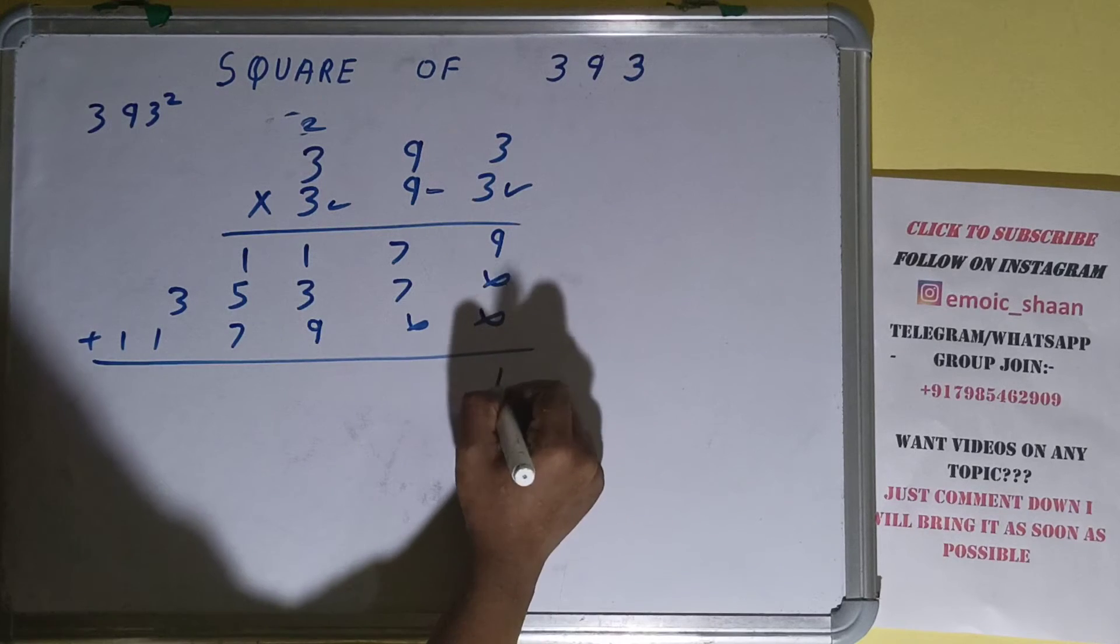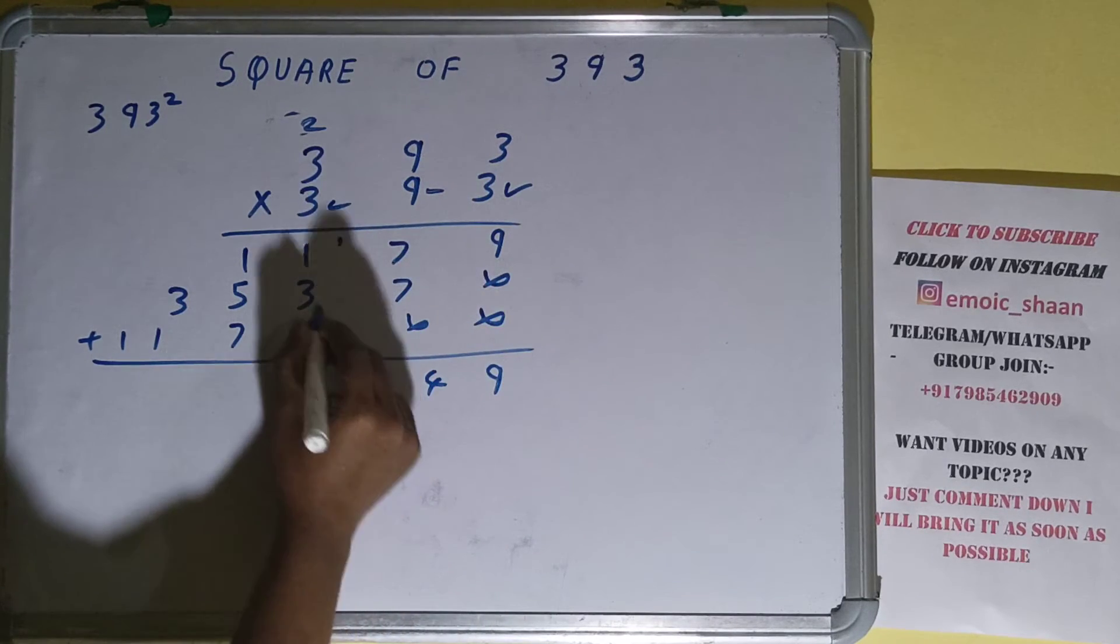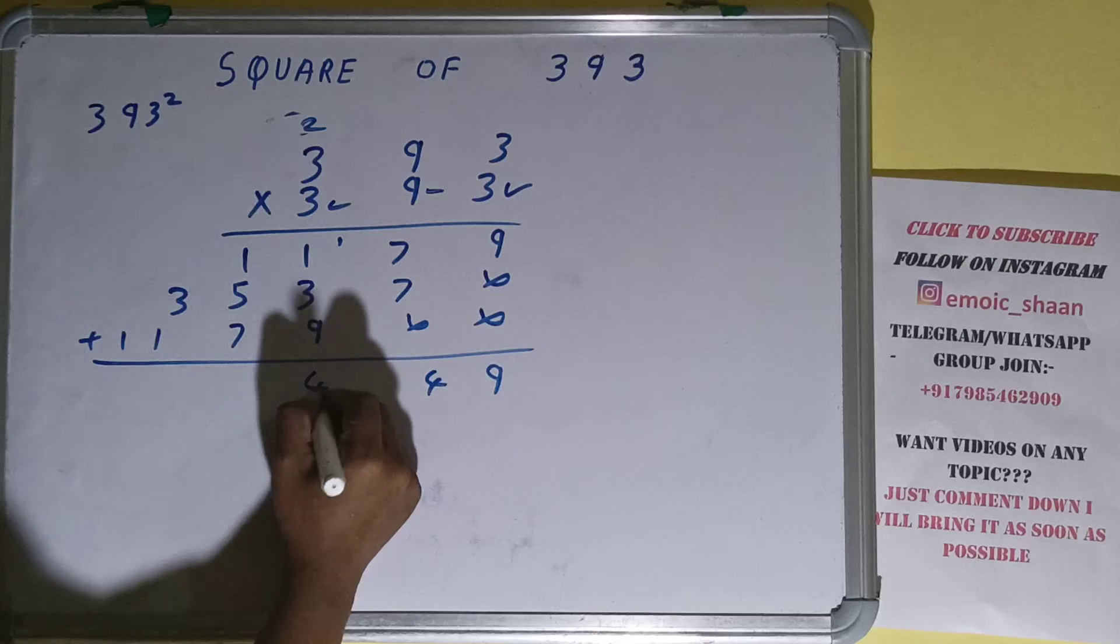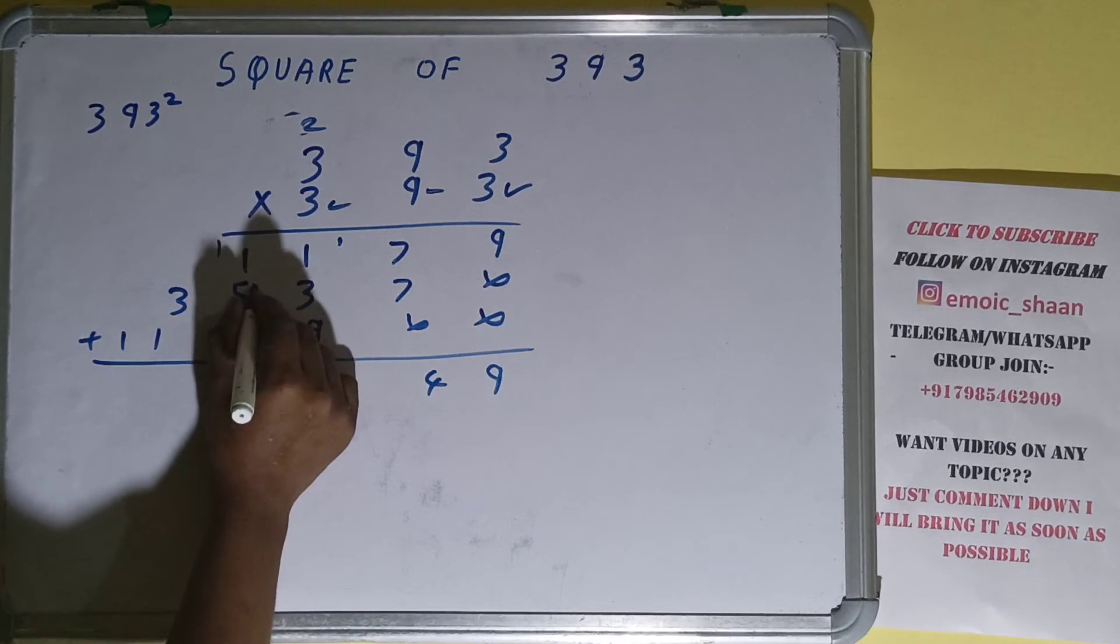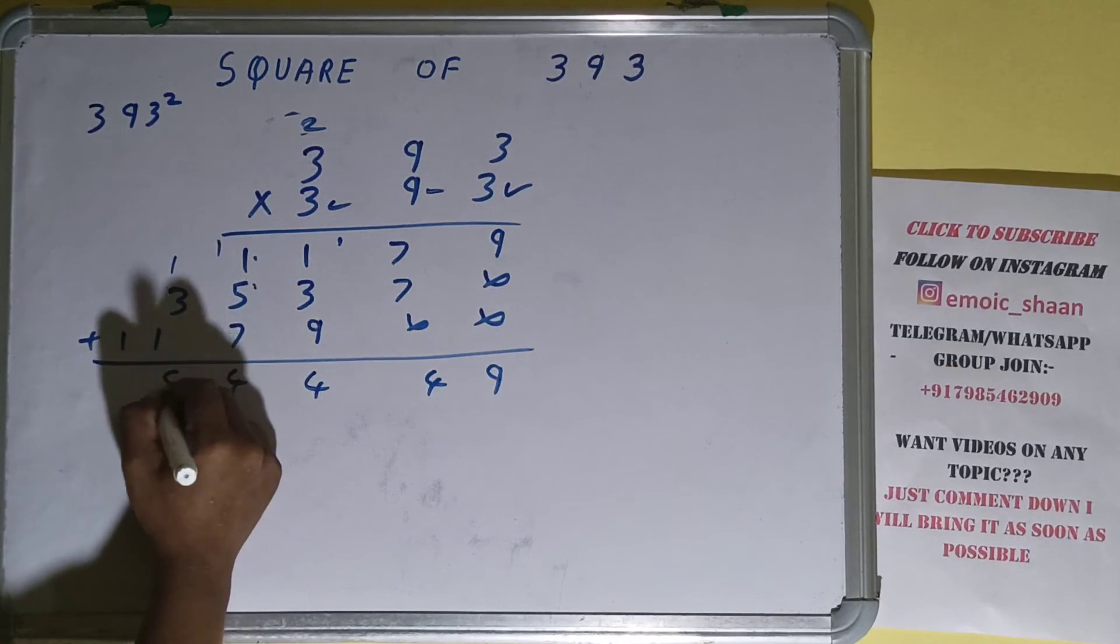Add everything: 9, 4, 10 plus 3 is 13, 4, 1 carry. 7 plus 5 is 12, 3, 4, 1 carry, then 5 and 1.